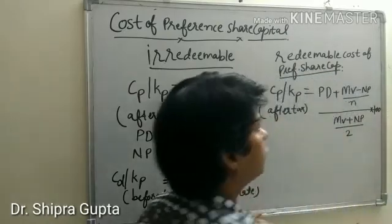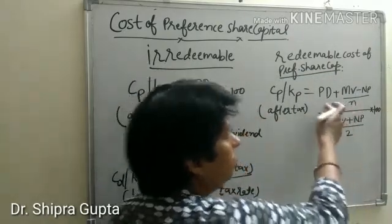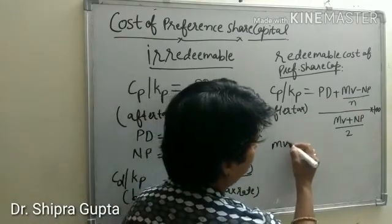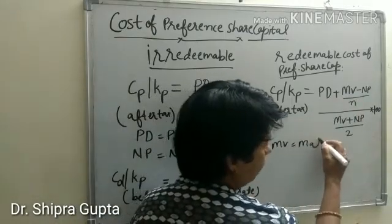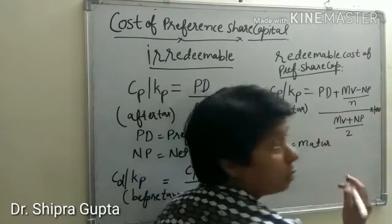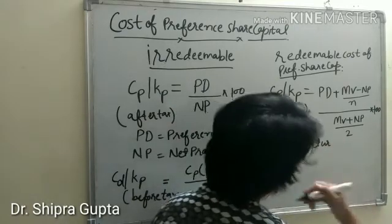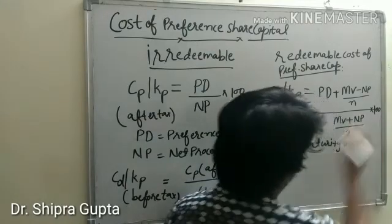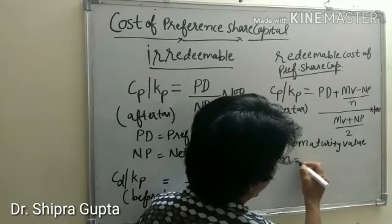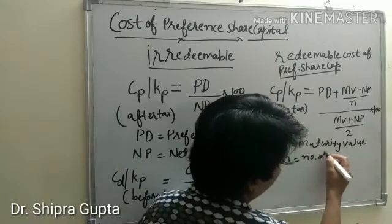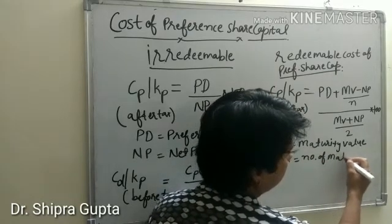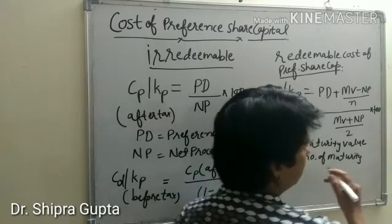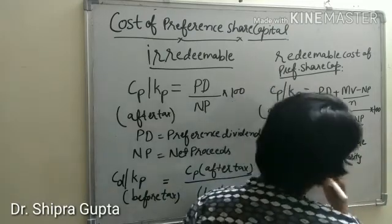In this formula, Pd stands for preference dividend. Maturity value stands for what will be paid after the time of maturity. Small n stands for number of maturity years — that is, how many years these preference shares will be paid.